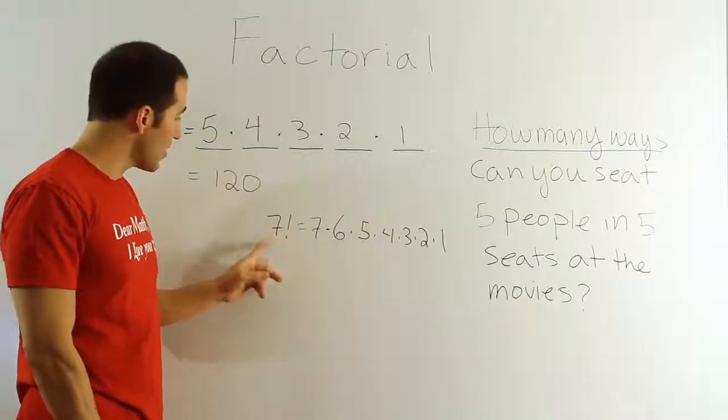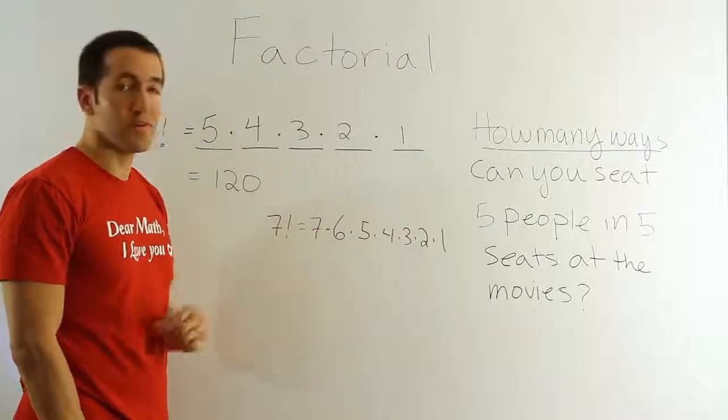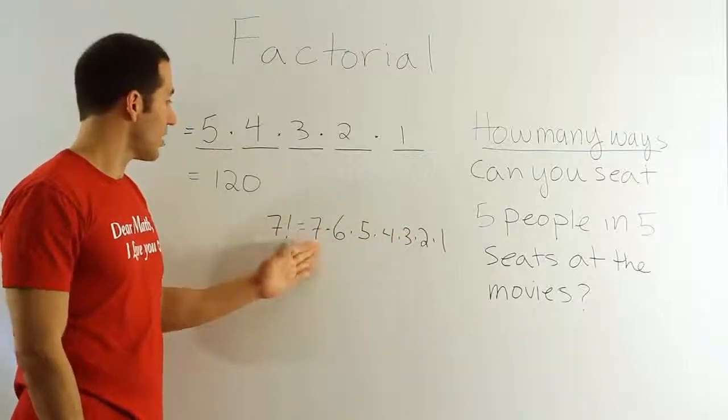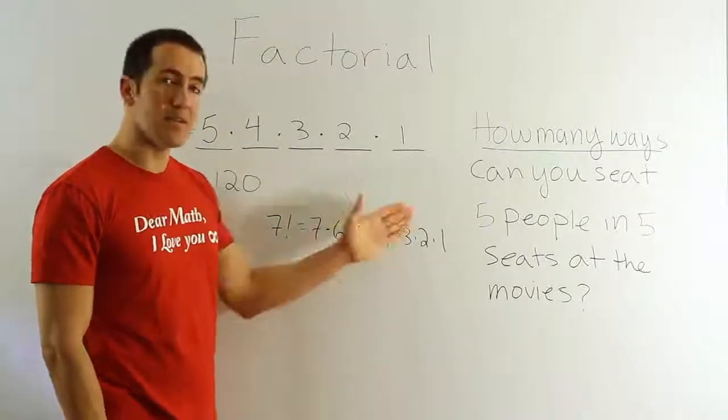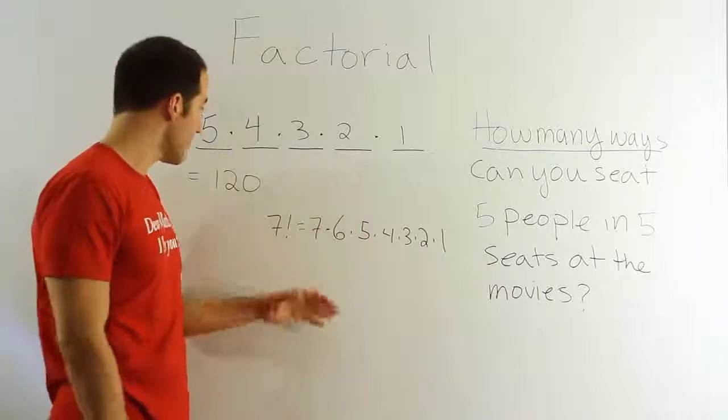So whenever you see this little exclamation point next to a number, you know that's what it's expressing. That idea of take the number and multiply it by all the integers less than it until you get to one. All right. Easy enough.